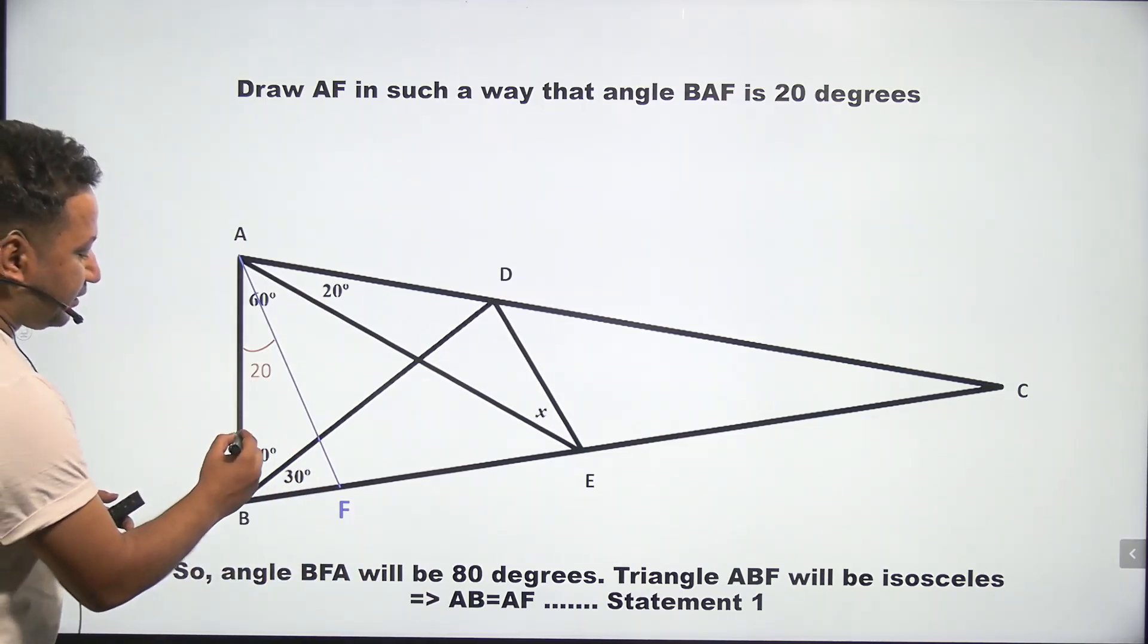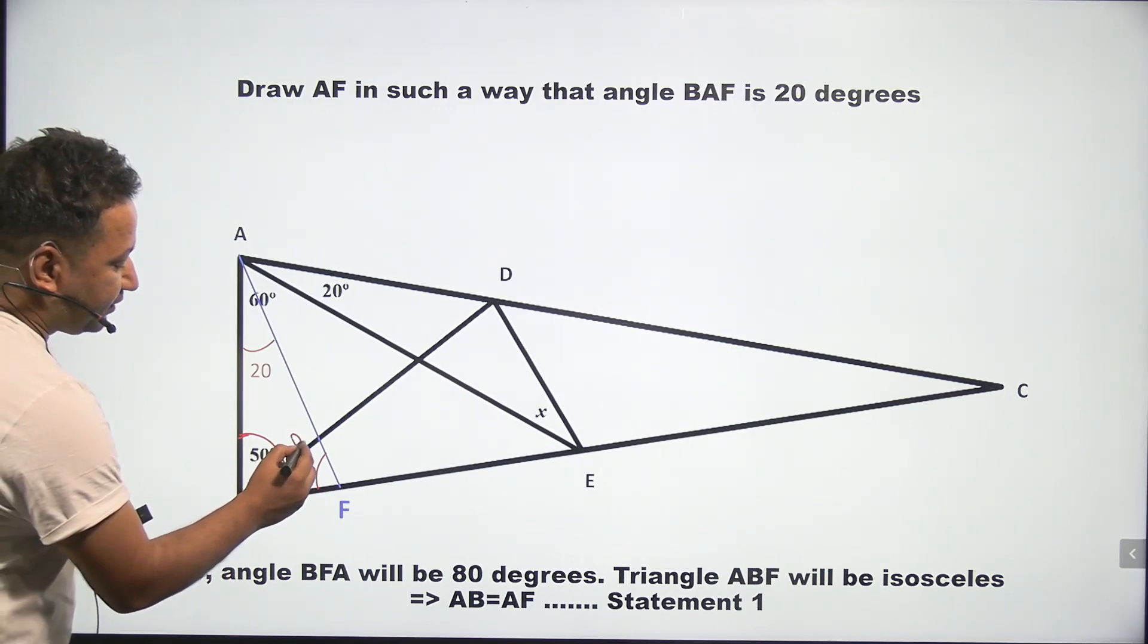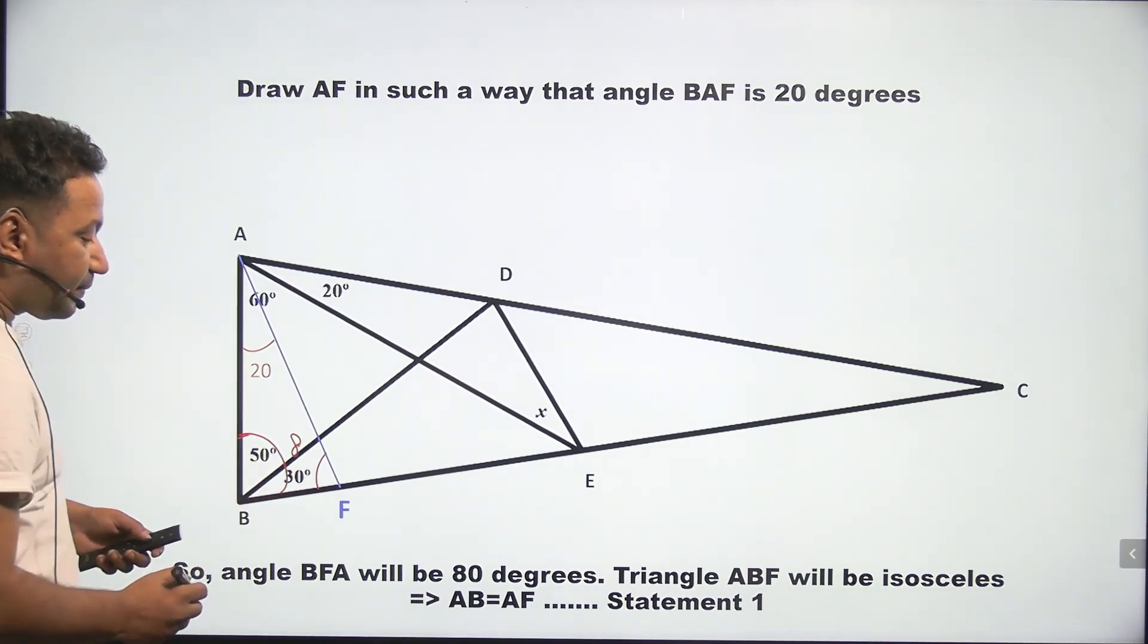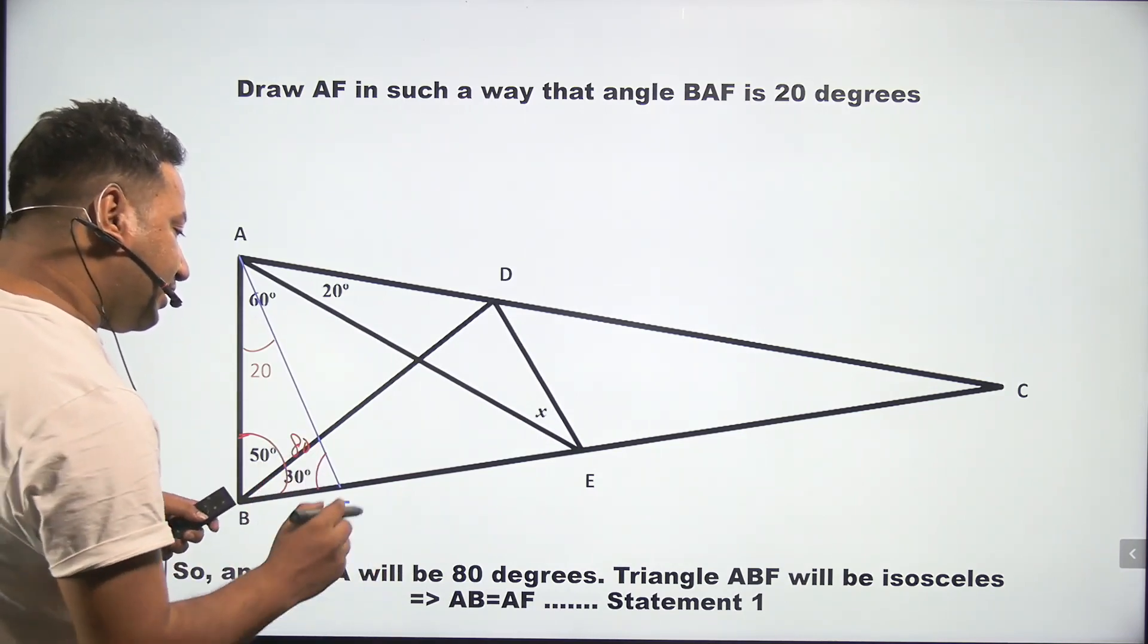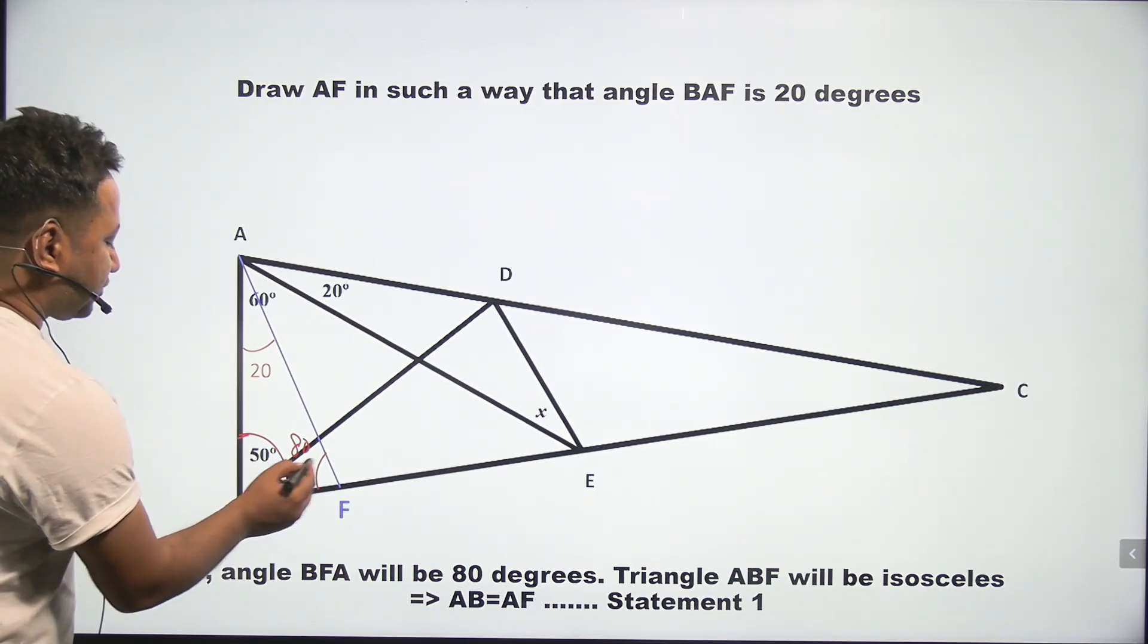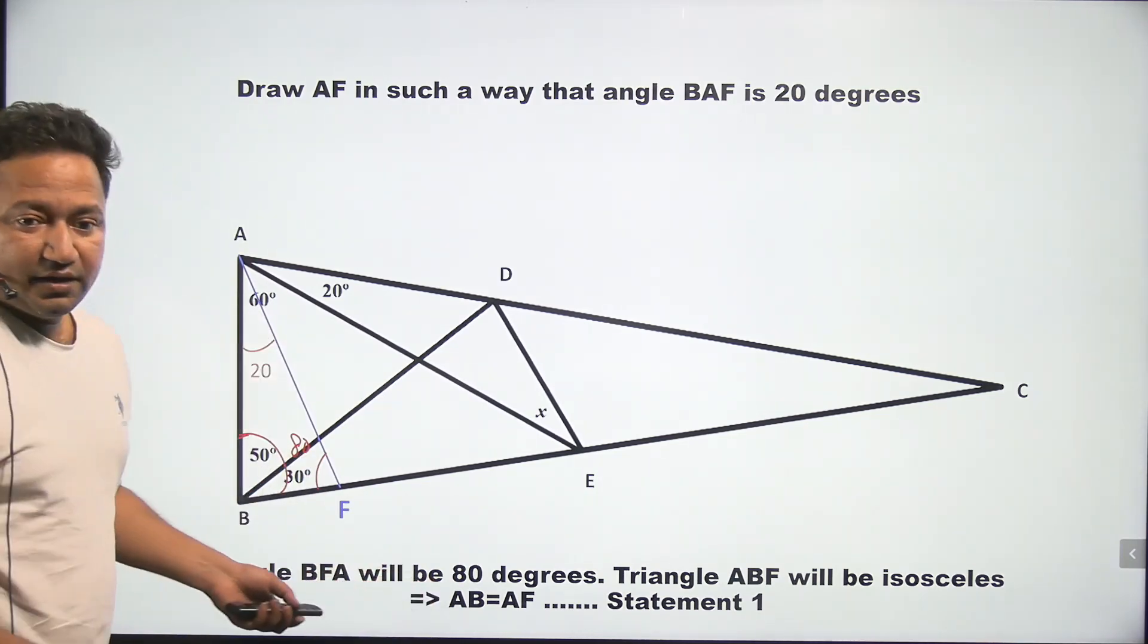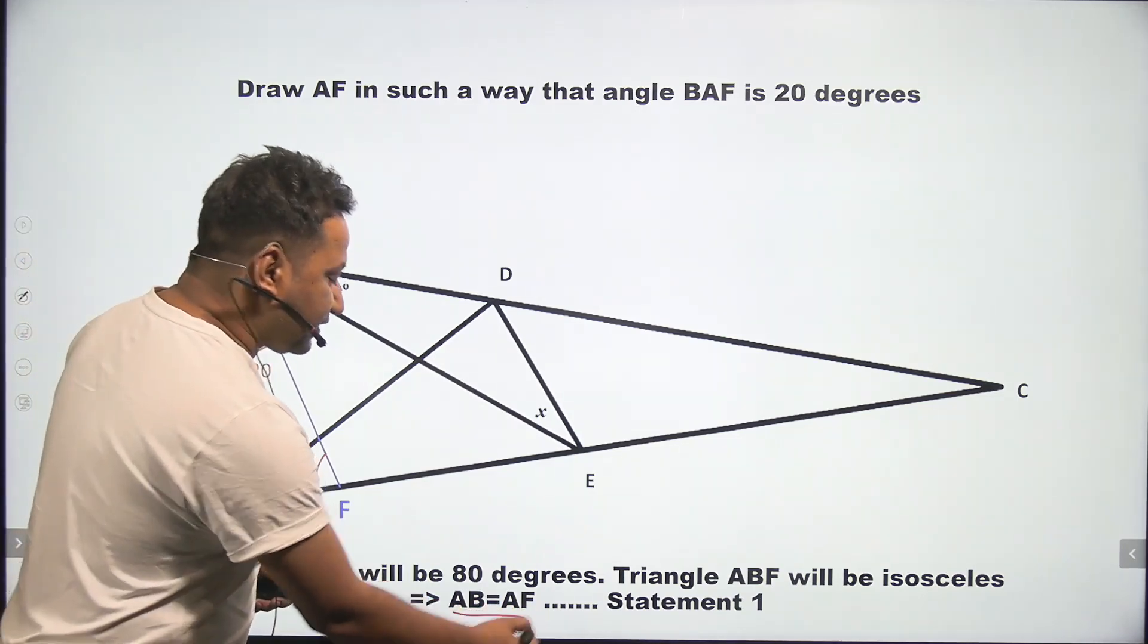This thing is 80, this whole is 80, this one is 20, this has to be 80. So triangle ABF will be isosceles, of course, because now these two angles will be equal. That means AB and AF will be equal, as mentioned in statement 1.